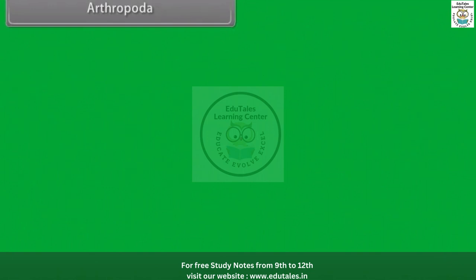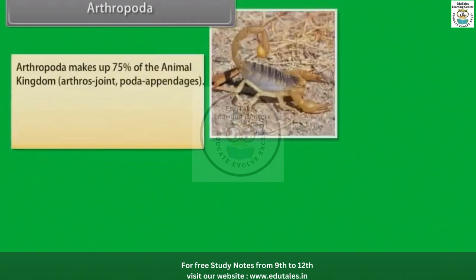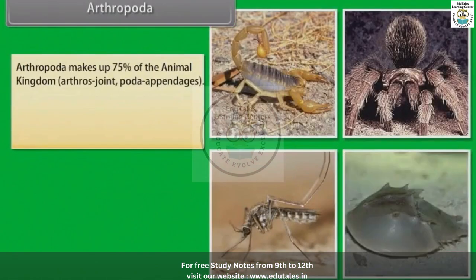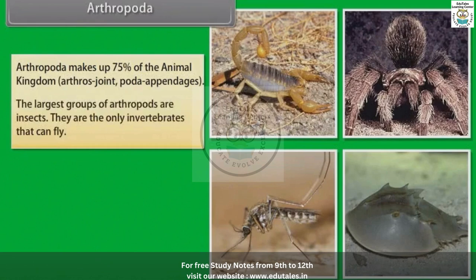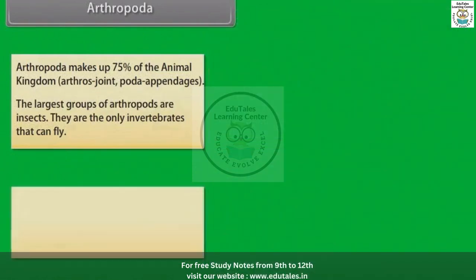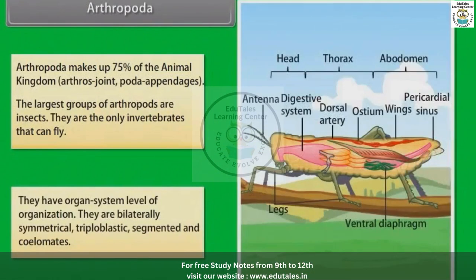Arthropoda makes up 75% of the animal kingdom. 'Arthros' means joint and 'poda' means appendages. The largest group of arthropods are insects — they are the only invertebrates that can fly. They have organ system level of organization.